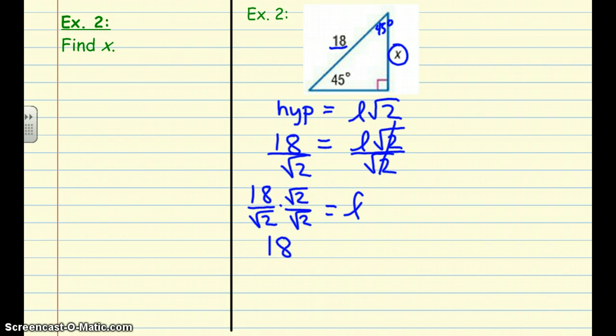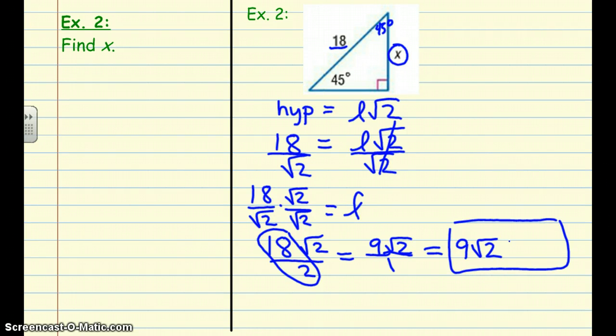That gives us 18 square root of 2 over 2. If we look closely we can simplify 18 over 2 to make 9 square root of 2 over 1, or just 9 square root of 2. What is that 9 square root of 2? This is the value of x. Going back here, we multiplied by square root of 2 over square root of 2 so we can get rid of that radical in the bottom half of our fraction.